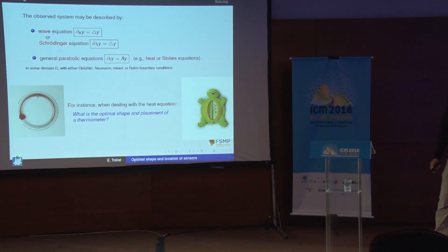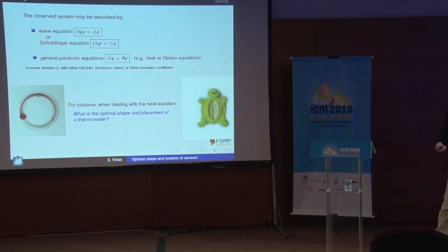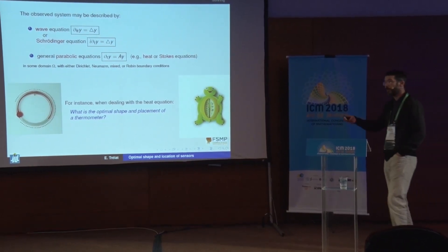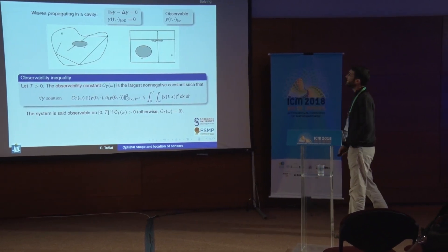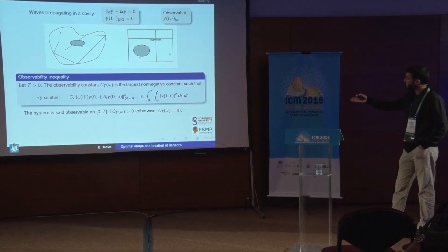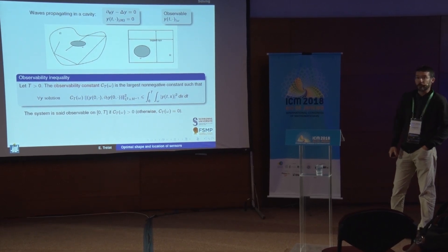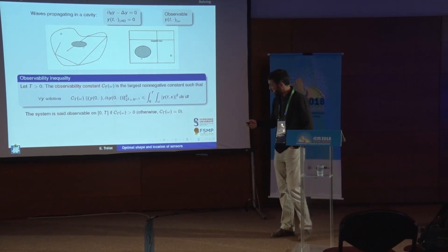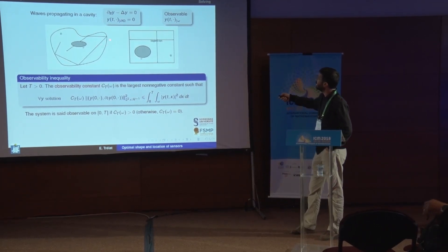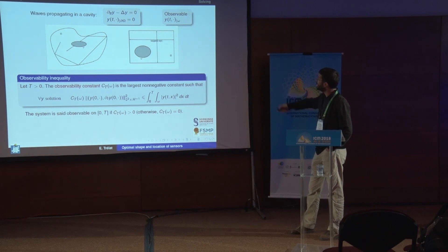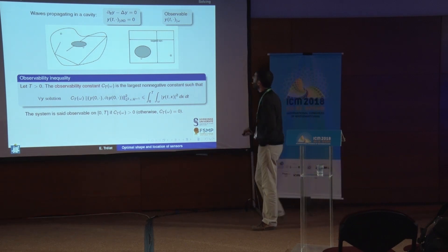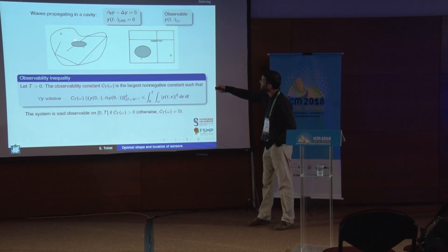The first part of my talk will be on the model itself, because actually modeling this problem is already a challenge. In order to lead this discussion, I will first focus on the wave equation — just for convenience. So in what follows, let us consider a domain, capital omega in R^n, with the wave equation inside and Dirichlet boundary conditions, and assume that we observe the solutions on a given subset, small omega, of capital omega.